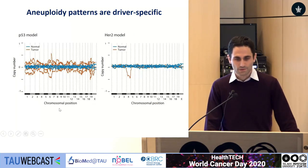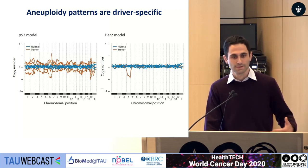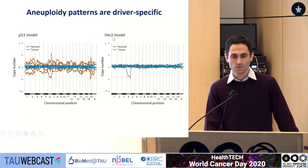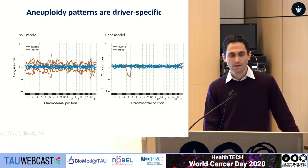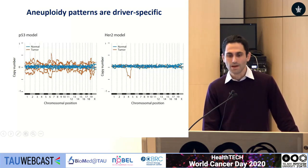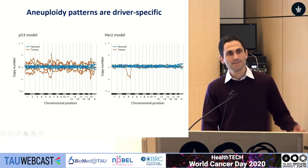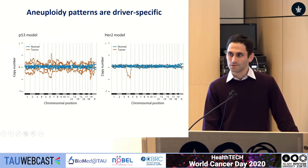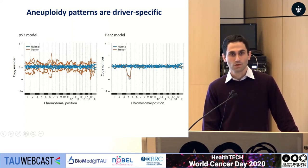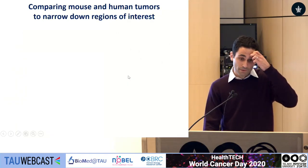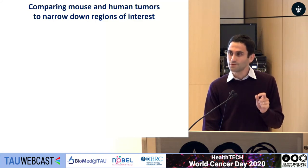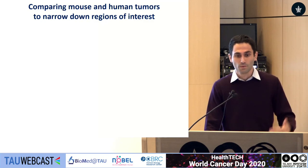Looking at breast cancer genetically engineered mouse models, we found that aneuploidy patterns are very much driver-specific. You can take breast cancer with similar pathology but initiated by a different transgene — in this case, the tumor suppressor P53 and the oncogene HER2. If the tumor is generated by P53 silencing, the resultant tumors are highly aneuploid, whereas if generated by HER2 amplification, they are mostly diploid. But this is not just a quantitative difference — the pattern of aneuploidy is also different. HER2-amplified tumors tend to lose mouse chromosome 4, and we can use these patterns to compare mouse and human tumors and narrow down regions of interest.